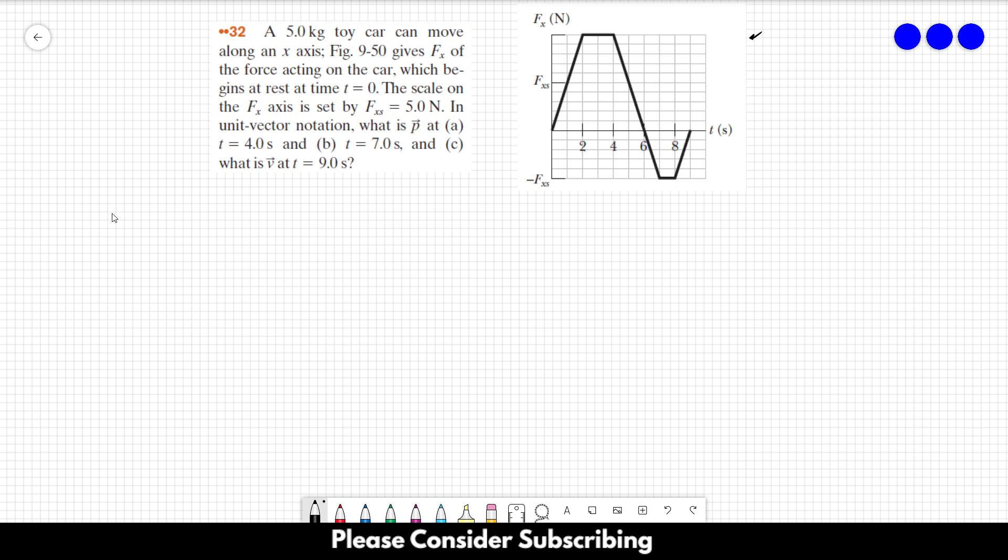So we have to remember the relation between the impulse and the change in the linear momentum. So that's the equation that we are going to use. So since it begins at rest, we know that the initial momentum is equal to 0. So the impulse will be equal to the change in the momentum, which is equal to the final momentum minus the initial momentum. So this is 0. So the impulse is equal to the final momentum. So if we want to find the final momentum, we just need to calculate the impulse.